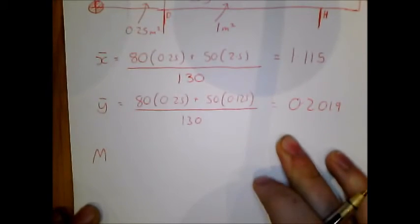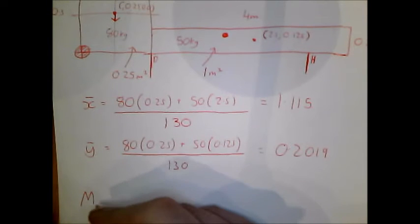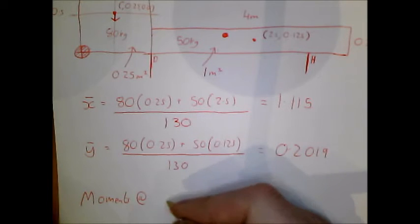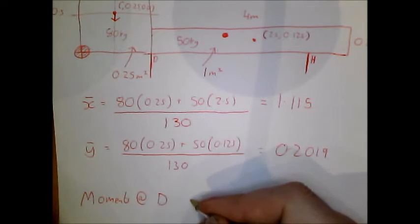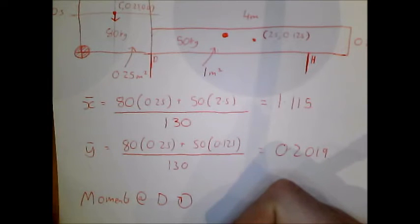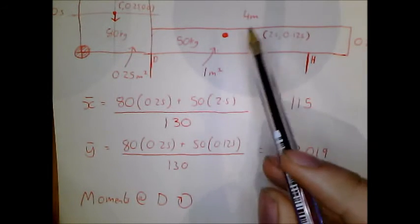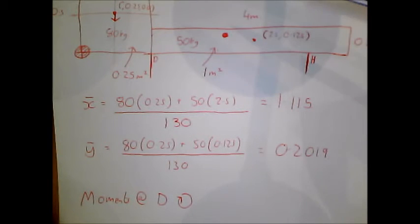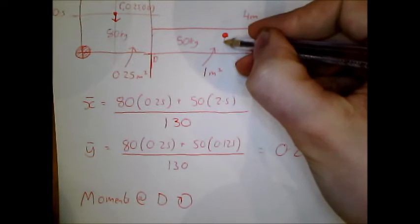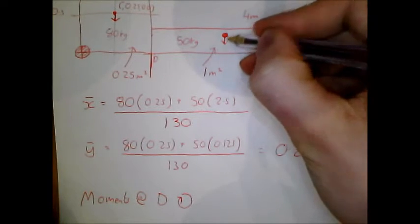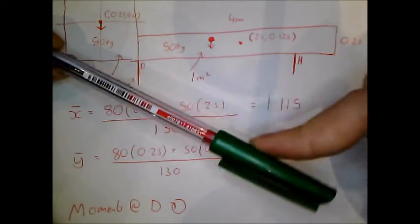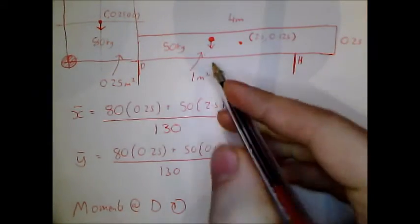Taking moments at D. And we shall do this clockwise. We can say that we have the centre of mass and that's going downwards. This is going to make it go clockwise, so this is going to be positive.